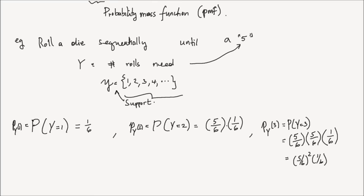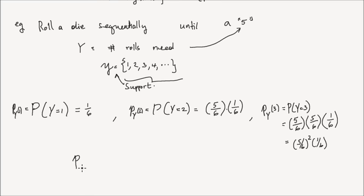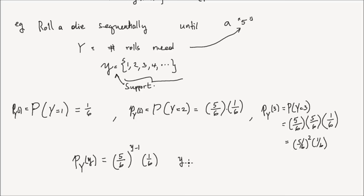So for any value in the support, the PMF — the probability that the random variable takes a value of little y — is equal to (5/6)^(y−1) times (1/6), for y in the support {1, 2, 3, 4, 5, 6, ...}. And that's the probability mass function of the random variable y.